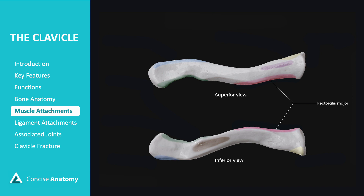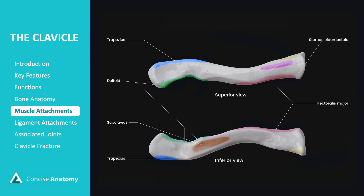Let's now visualize the muscles attached to the clavicle. The pectoralis major attaches at the anterior surface of the medial end. The sternocleidomastoid muscle connects on the superior surface of the medial end. Moving laterally, the deltoid attaches to the anterior surface of the lateral end, and just behind that, the trapezius muscle connects to the posterior surface of the lateral end. Looking at the inferior surface, the subclavius muscle is attached to this area. Lastly, the sternohyoid muscle is attached to the posterior surface of the medial end.